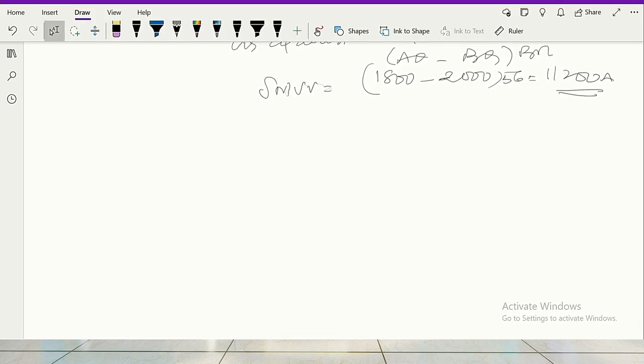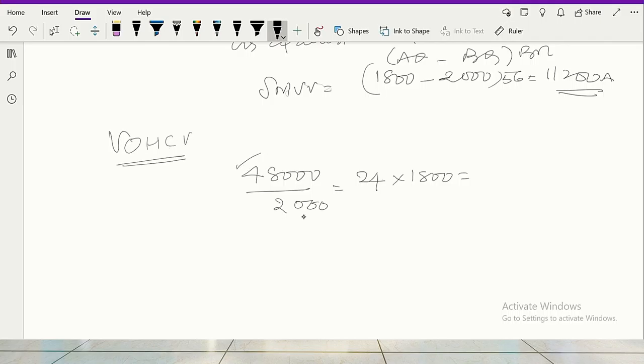Now I will go to calculate variable overhead. Rates are all same. So variable overhead is 48,000 is standard. That is for 2,000 units. 48,000 for 2,000 units. That means 24 is the standard rate. For 1800, how much it should be? This is variable overhead cost variance. 48,000 is the standard cost for 2,000 units. So standard rate is 24. And 1800 is actual production. So how much is that? 24 into 1800, 43,200. And what is the actuals? Actual cost is 44,400.